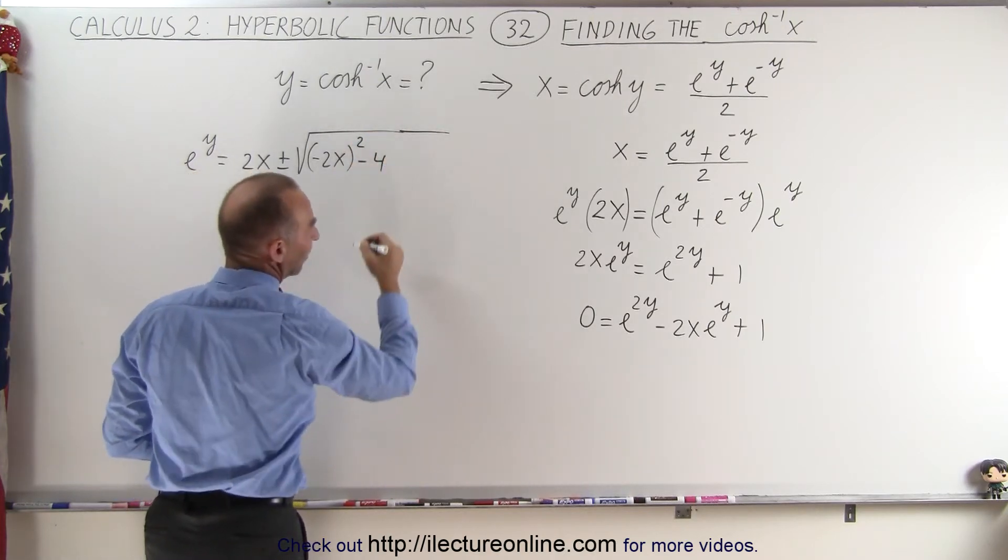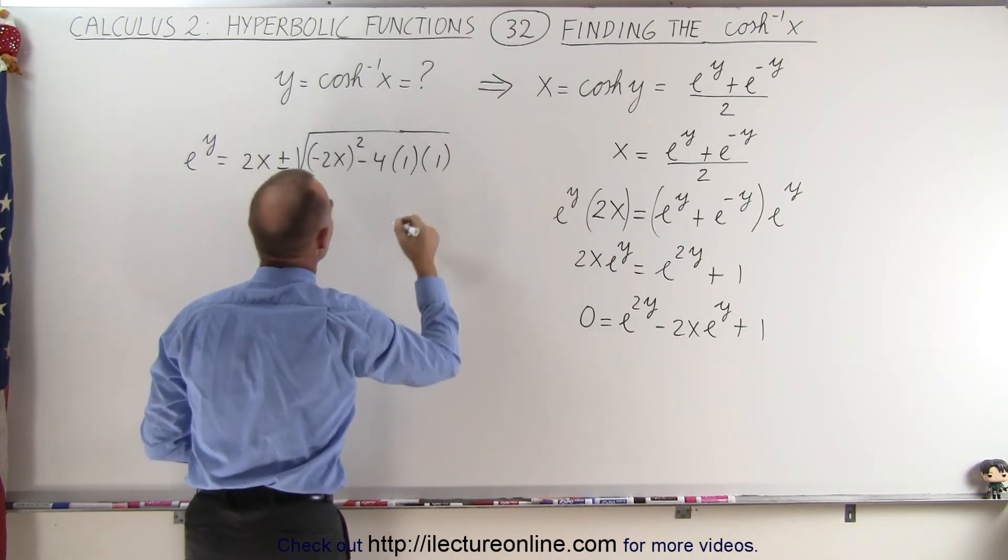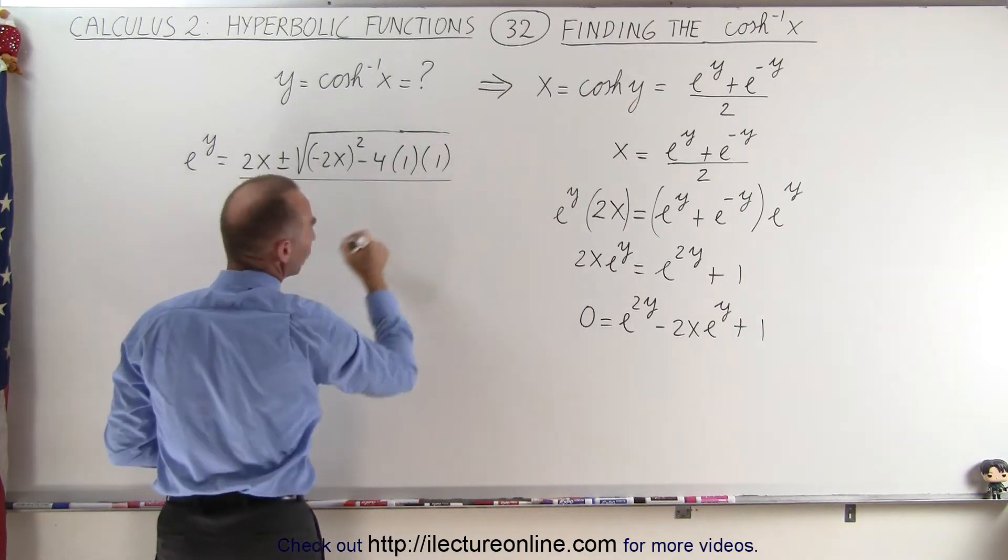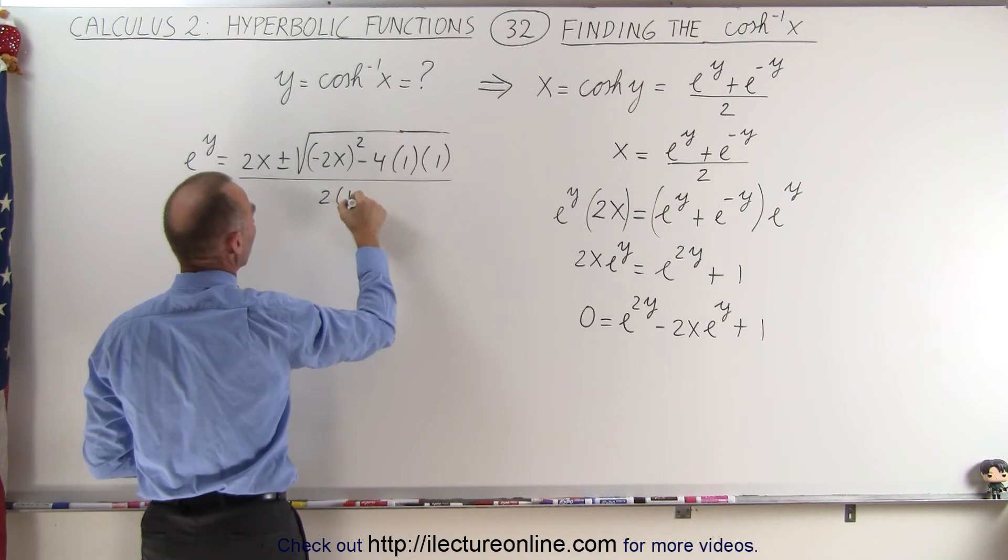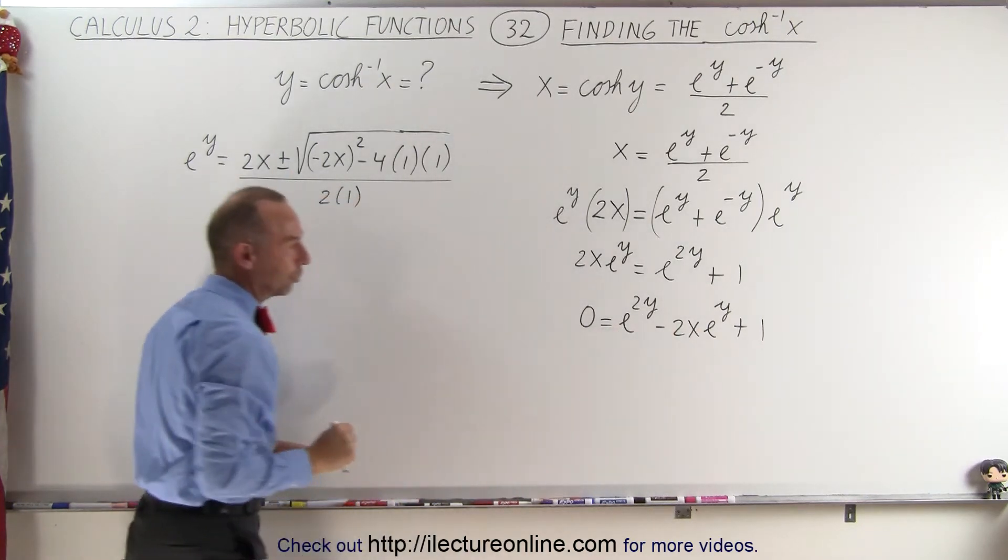minus 4 times a, which is 1, times c, which is also 1. And the whole thing divided by 2 times a would be 2 times 1. Again, these are the coefficients of the first, the second, and the third term.